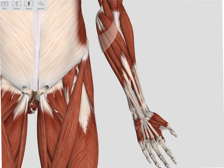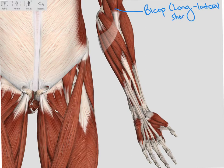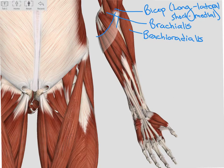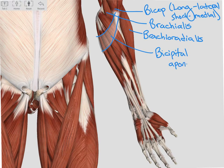Looking at the flexor muscles one more time, we see our bicep again at the top, remembering that the long head is lateral and the short head is medial. The long head is the head that runs through the bicipital groove. Deep to that, we can see our brachialis, which is another elbow flexor, our brachioradialis on the radial side, and then our flexor mass. We also note this section of aponeurosis that runs from the end of the bicep tendon towards the ulnar side. We call this our bicipital aponeurosis, and it's an extension of the bicep tendon.